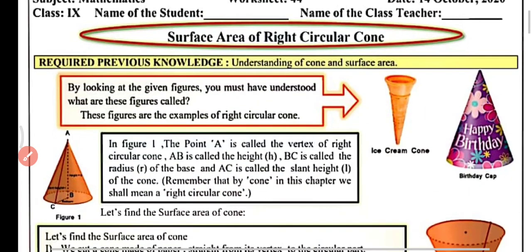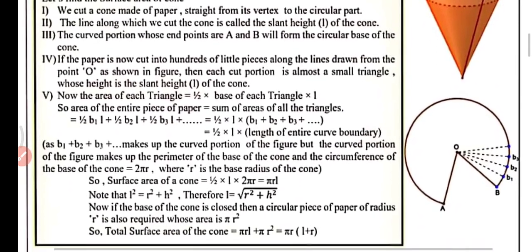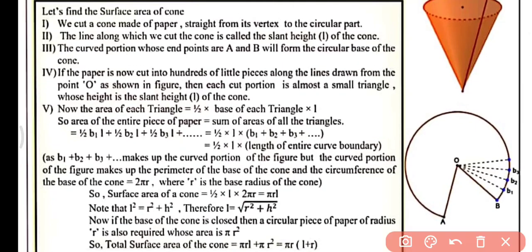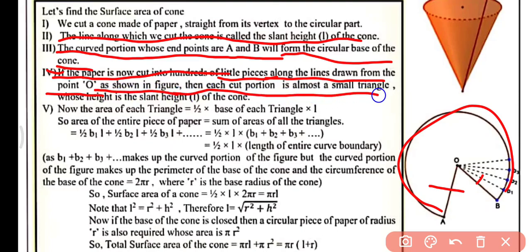Now let's proceed and find the surface area of a cone. We will cut a cone made up of paper straight from its vertex to the circular part. The line along which we cut the cone is called the slant height, that is L of the cone. You can see here OA and OB are the slant height of the cone. The curved portion whose endpoints are A and B will form the circular base of the cone.